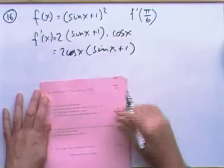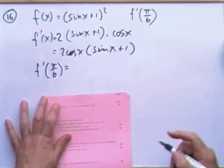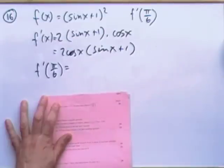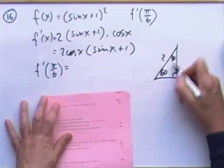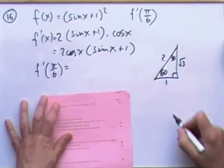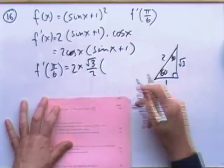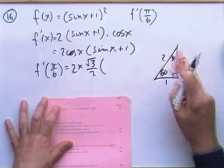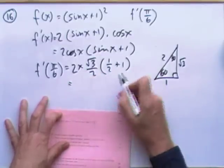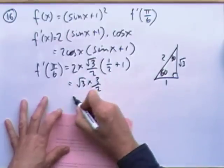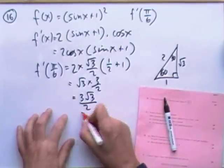So the derivative is 2 cos x times (sin x + 1), evaluated at x equals π upon 6 — that's 30 degrees. Using the 30-60 triangle: cos 30° is root 3 upon 2, sin 30° is one half. So it gives 2 times (root 3 over 2) times (a half plus one) equals root three times three upon two, which is 3 root 3 upon 2. Three marks fairly quickly.